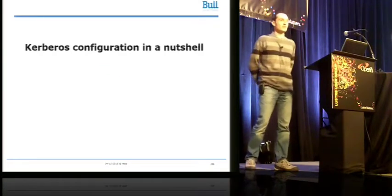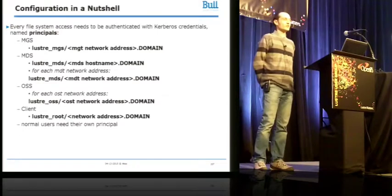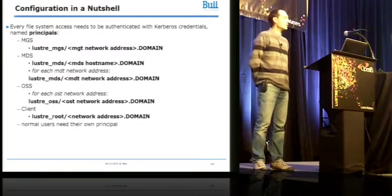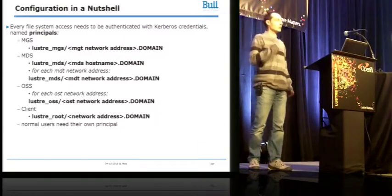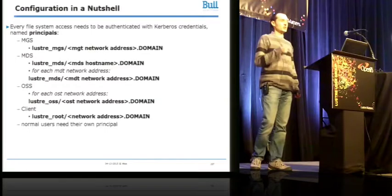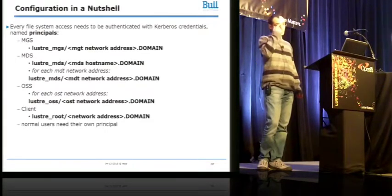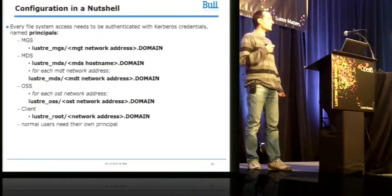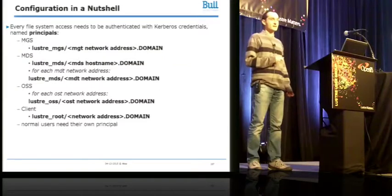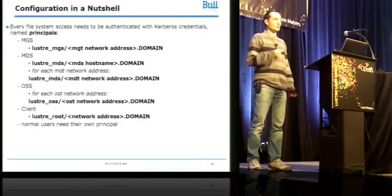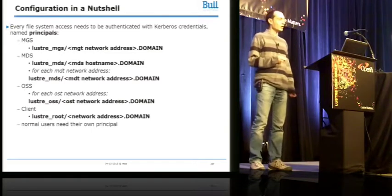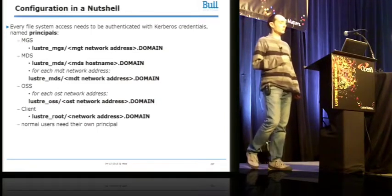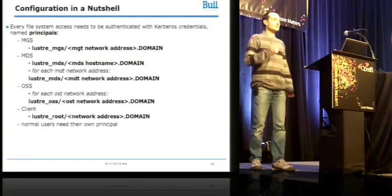So let's configure it now. The first thing to do with Kerberos is to declare identities. In Kerberos lingo, credentials are called principals. You have to declare one principal for every Lustre server and client — Lustre MGS, Lustre MDS, Lustre OSS, and Lustre root for clients. Because Kerberos relies on network addresses for authentication, you have to use the real network addresses used by your targets and not only the hostname. The MDS is a particular case because there is a component that uses the loopback connection, so for the MDS you need both principals. And of course, normal users need their own principal.